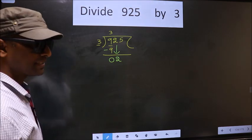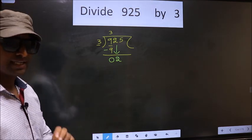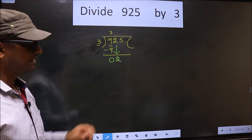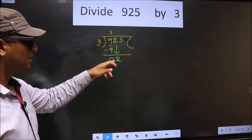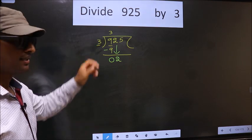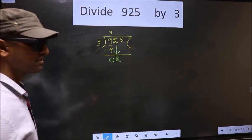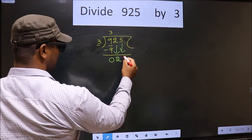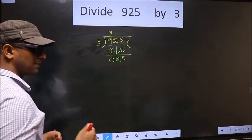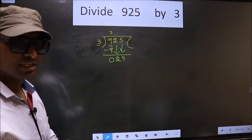And the mistake is this: here we have 2, here 3. 2 is smaller than 3, so what many do is they directly bring down the other number 5 down. You should remember whenever you are bringing down 2 numbers at the same time, then compulsory you should put 0 in the quotient.